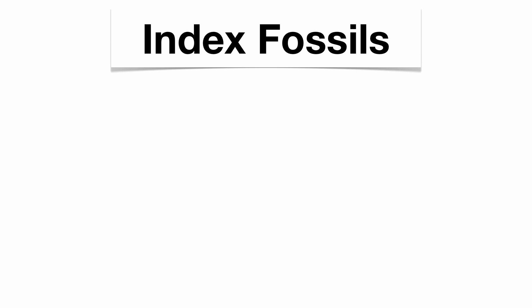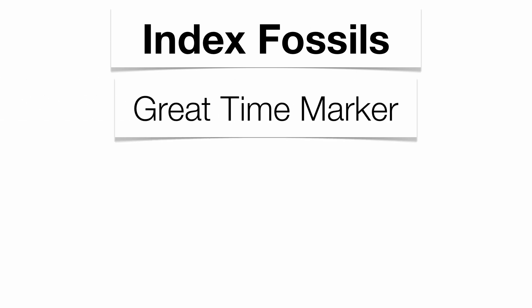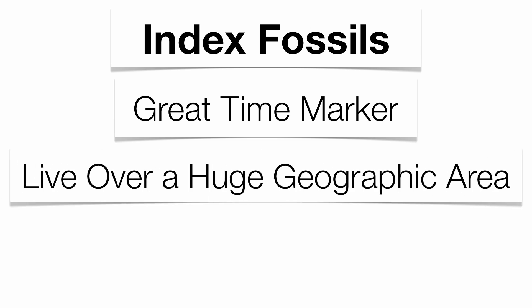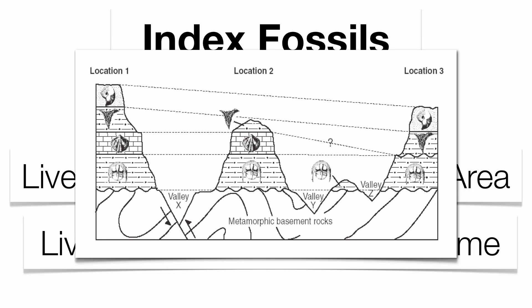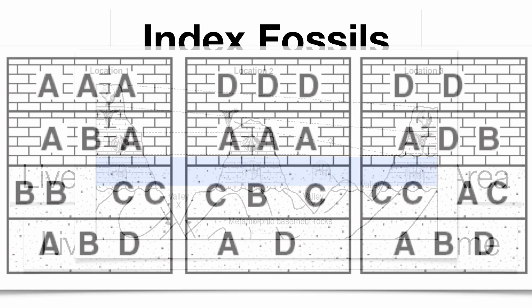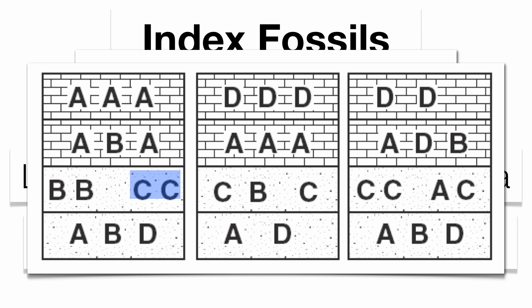When we talk about fossils, there's one specific type that's very important: index fossils. They make very good time markers because they lived over a huge geographic area for a relatively short period of time. Index fossils are found in one distinct layer of rock — for example, a trilobite at the bottom is only found in one distinct layer of siltstone but appears in all four locations. Similarly, the index fossil represented by letter C is found in one distinct layer of sandstone across all three locations.